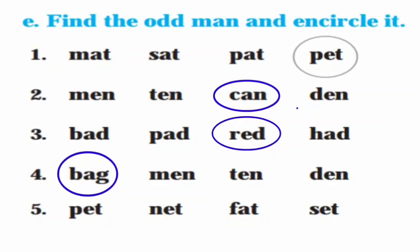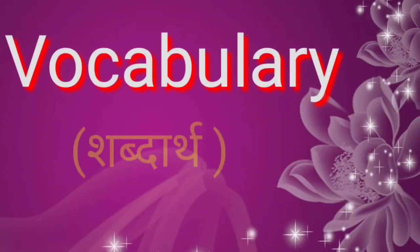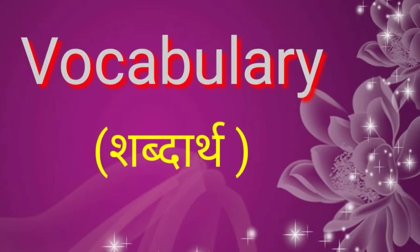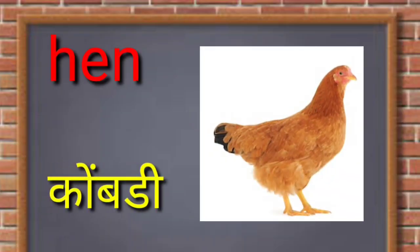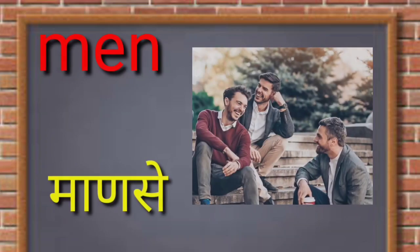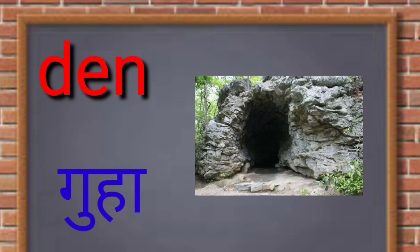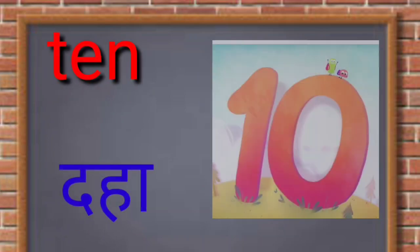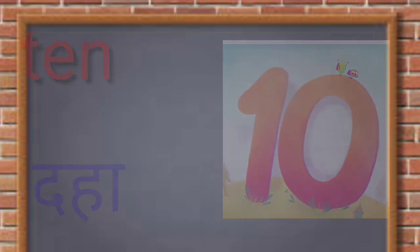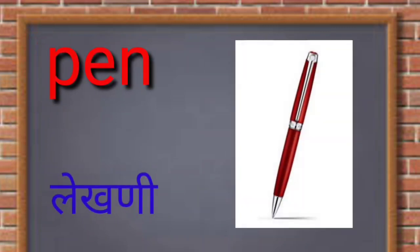Aani Fat ya shabdacha uchchar vegla ahe. Noun odd man out: Fat. Ata aapan ya word basket madhil vocabulary mhanje shabdartho yachya. Hen mhanje kodi, Men mhanje mane, Den mhanje guha, TEN mhanje daha 10, PEN pen mhanje lekhani.